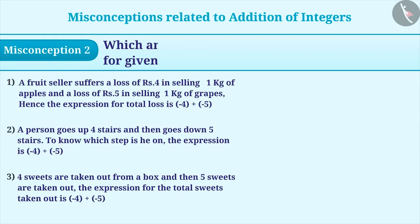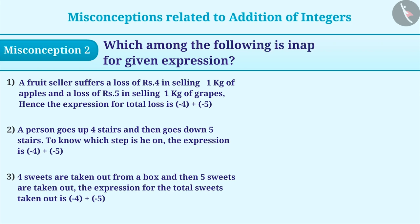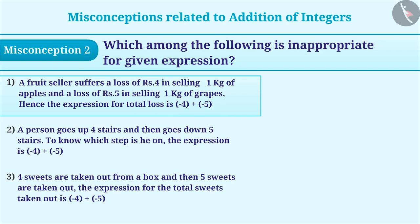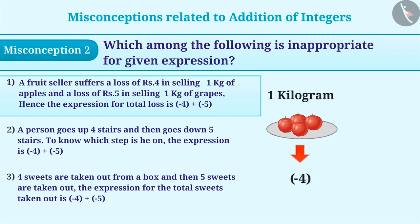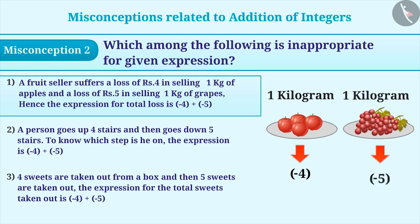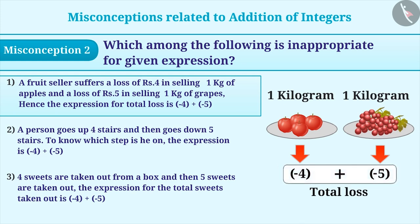Misconception 2. Which among the following is inappropriate for the given expression? The first statement shows that the fruit seller faces a loss of Rs.4 by selling apples and a loss of Rs.5 by selling grapes. As you know, loss is represented by a negative sign. Since the losses are Rs.4 and Rs.5, the total loss can be obtained by adding minus 4 and minus 5. Thus, statement 1 is true for the given expression, which means it cannot be the answer to the given question.